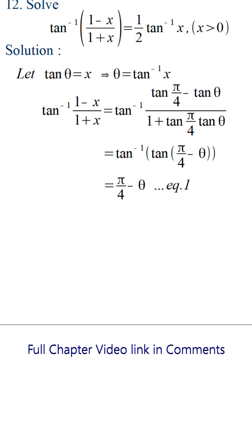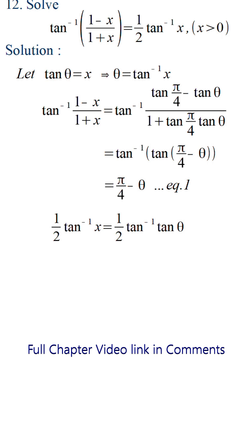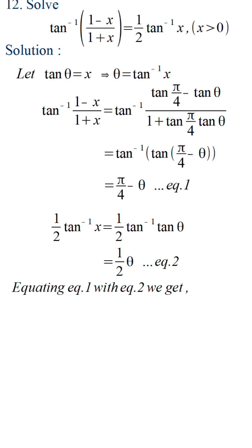Similarly, the right hand side: half·tan inverse x equals half of theta. Equating equation 1 and equation 2, we get π/4 minus theta equals half theta. Simplifying this, we get theta equals π/6.